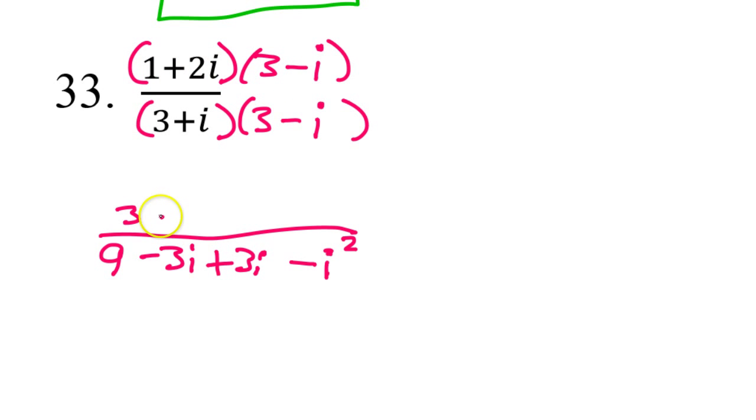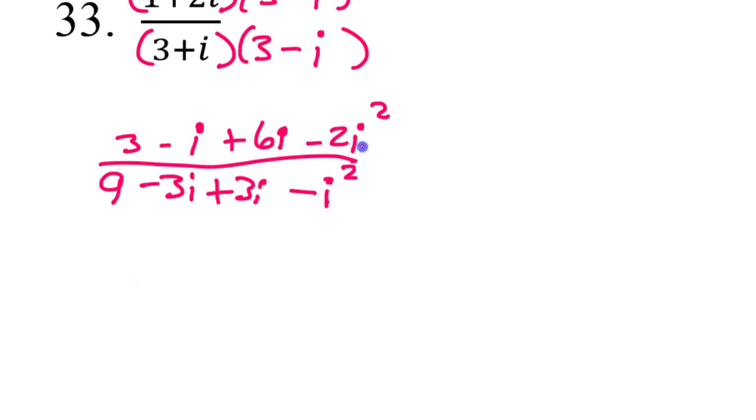Outer, I've got negative i. Inner, I've got 6i. And last, I've got negative 2i squared. I'm just going to deal with the i squared now. So that's going to make 3 minus i plus 6i plus 2. And then 9 minus 3i plus 3i plus 1.